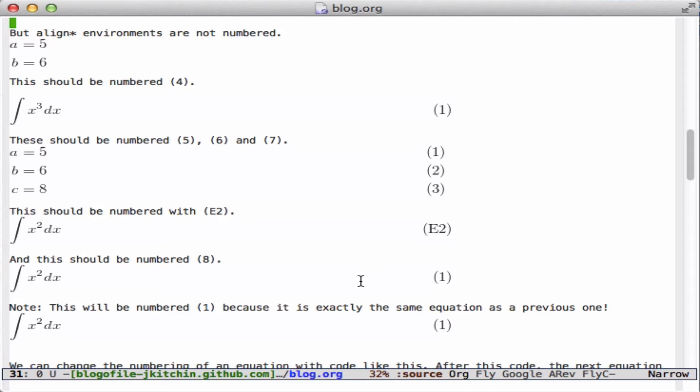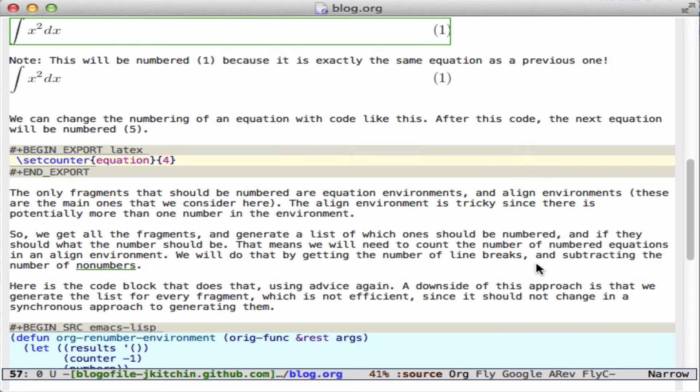So the problem is these are created independently by taking the little fragment, sticking it in a TeX file, and using dvipng to pull it out. So what we're going to do then is figure out a way to insert this little bit of LaTeX code that would change the numbering for each one and do that in a way that allows us to get the numbering.